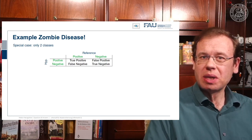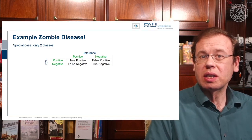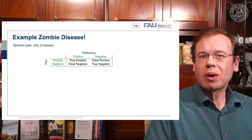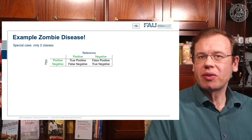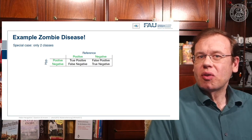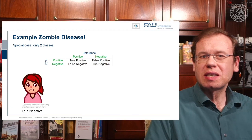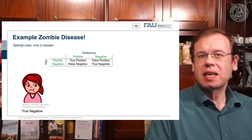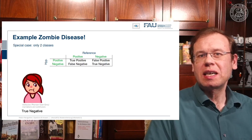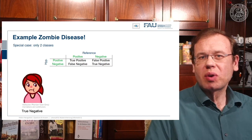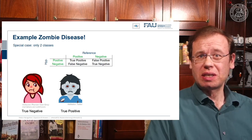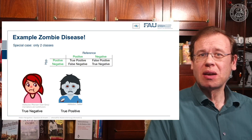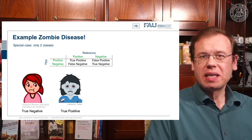People could actually be zombies — that would be the reference, shown in the columns — or they could not be zombies, so either positive or negative. Our classification result, the hypothesis, could then also be either positive or negative. There are regular humans, so that is a true negative: they are just regular humans and the test result should also be negative for humans. Then of course, we want our classification system to detect zombies — there are factual zombies out there, and we want the result to also be zombie, so this would be a true positive.